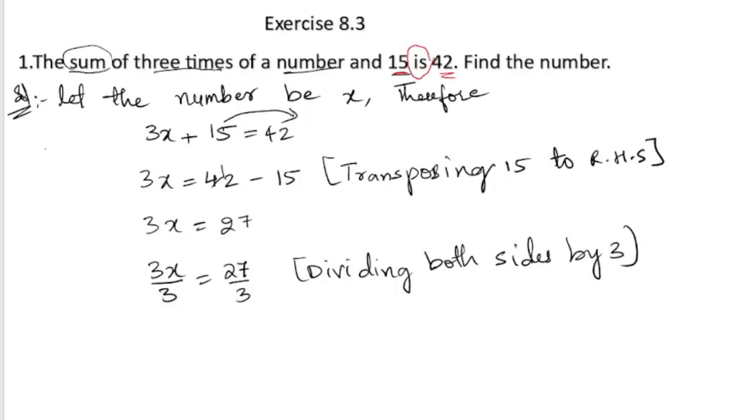Next, here we can cancel this 3. 3 ones are 3, 3 ones are 3, 3 nines are 27. So x equals to 9. So we have got the required number.